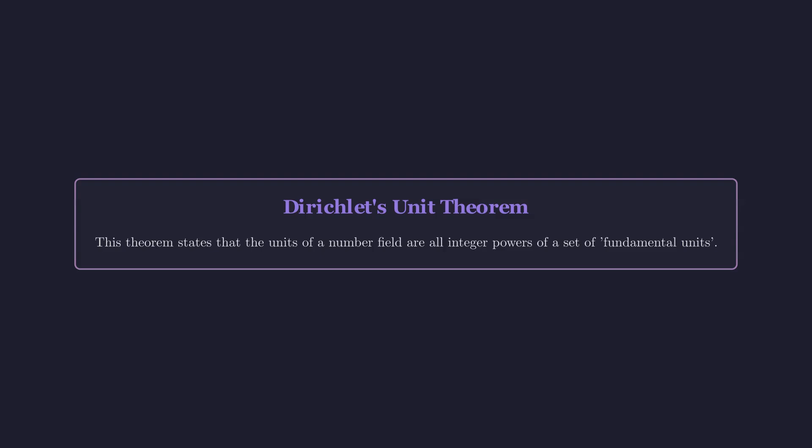Numbers with a norm of 1 are called units. Our problem is now reduced to finding the right unit. A major result, Dirichlet's unit theorem, tells us that all integer solutions are generated by powers of a single fundamental unit. This means we don't have to search randomly. We just need to find one base solution and check its powers.